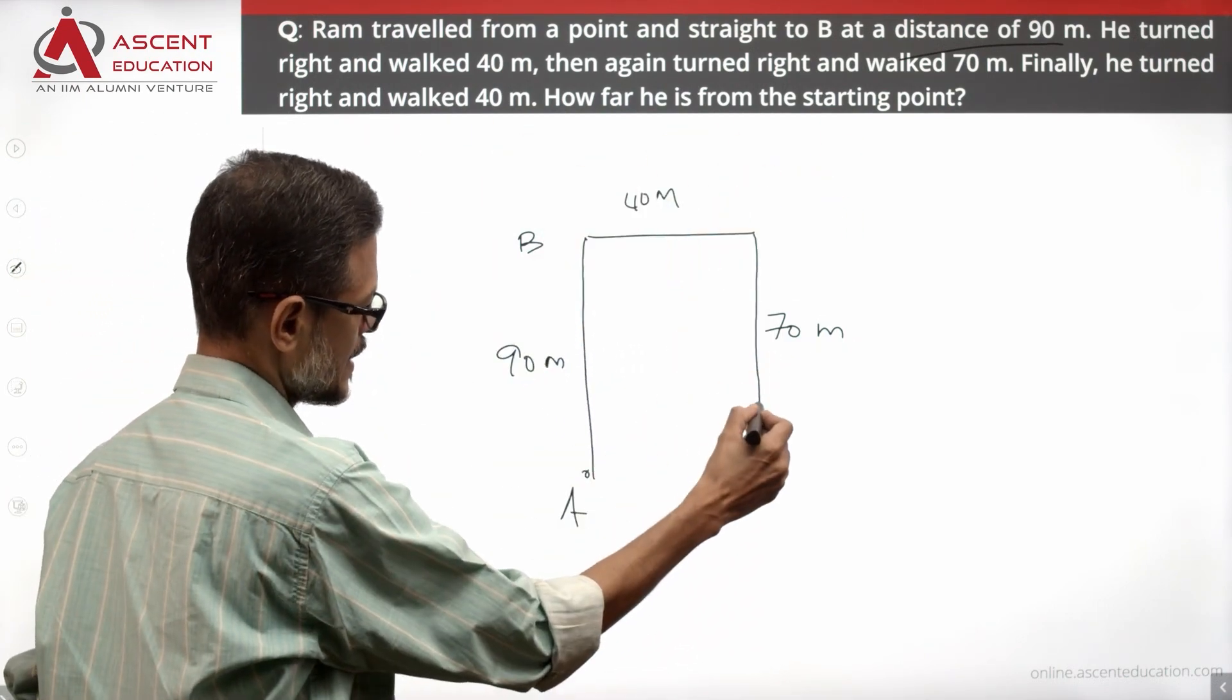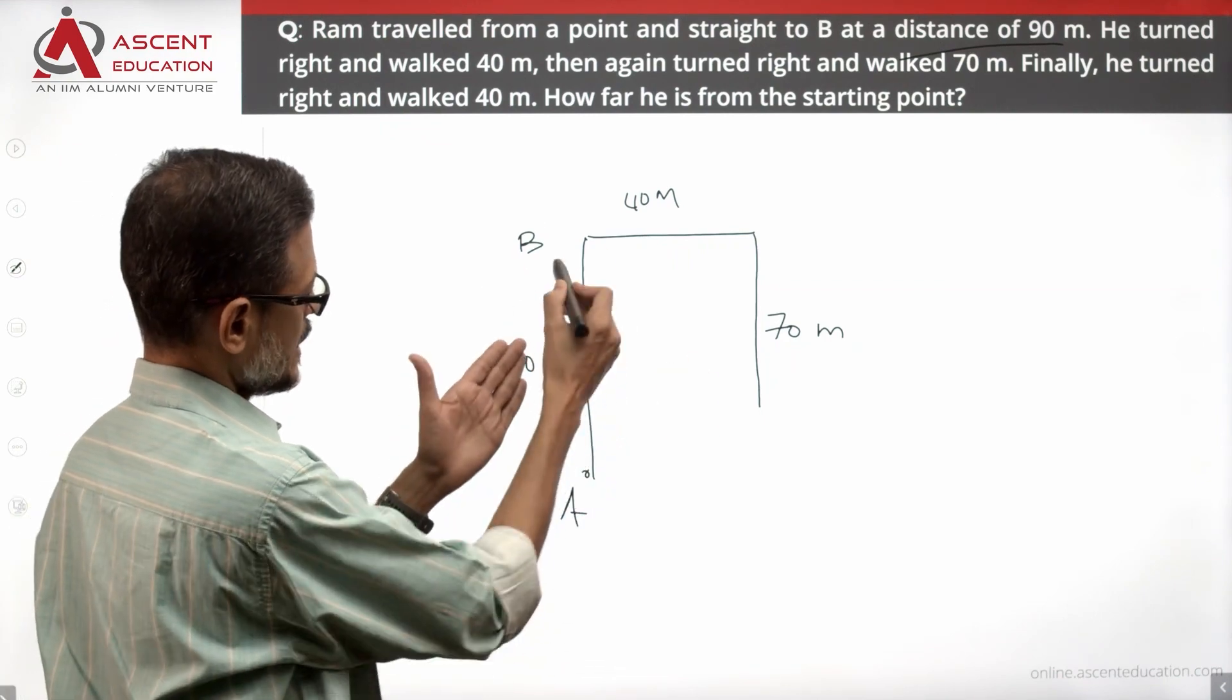Finally he turned right. He has to turn in this direction and walk 40 meters. So here he is 40 meters.